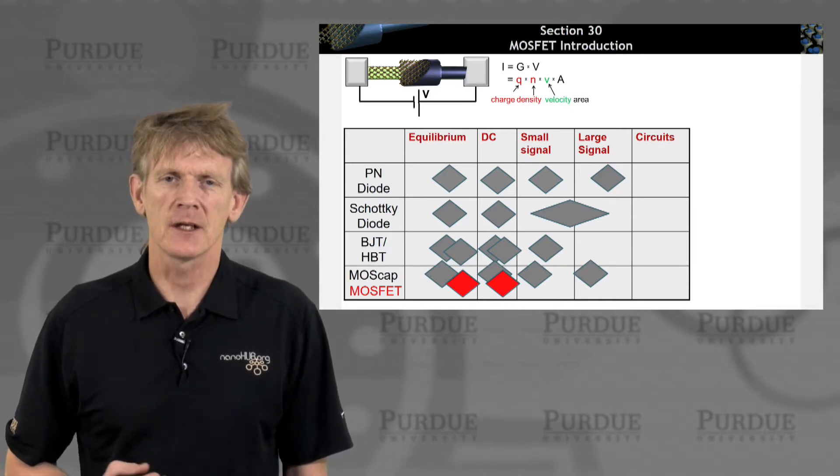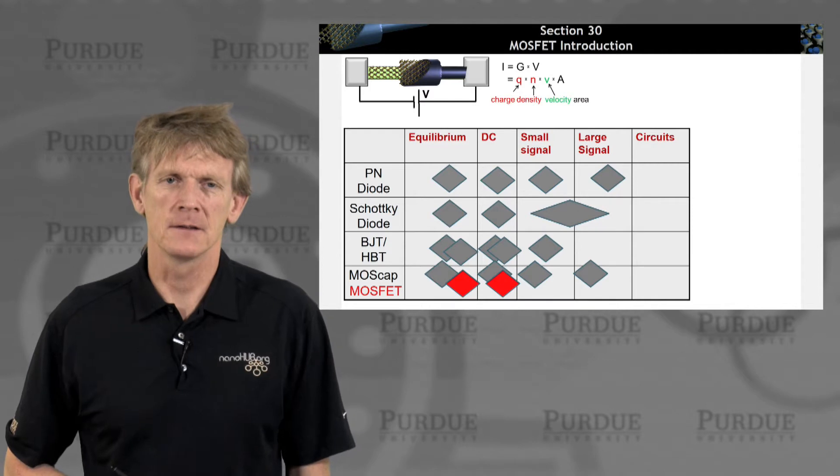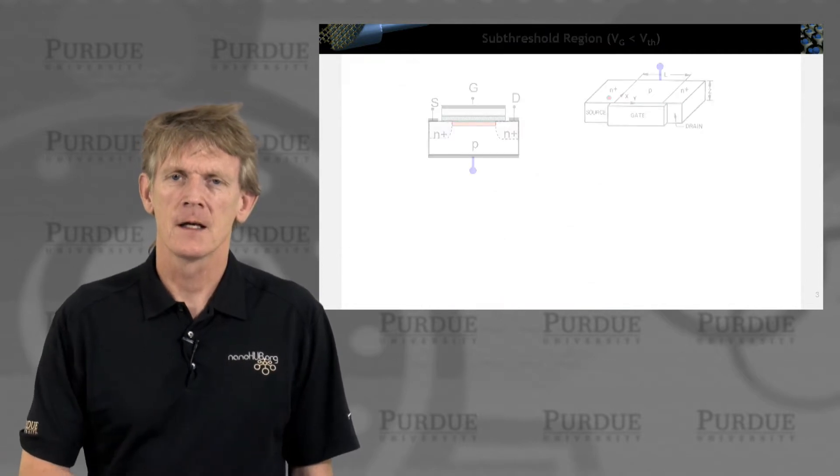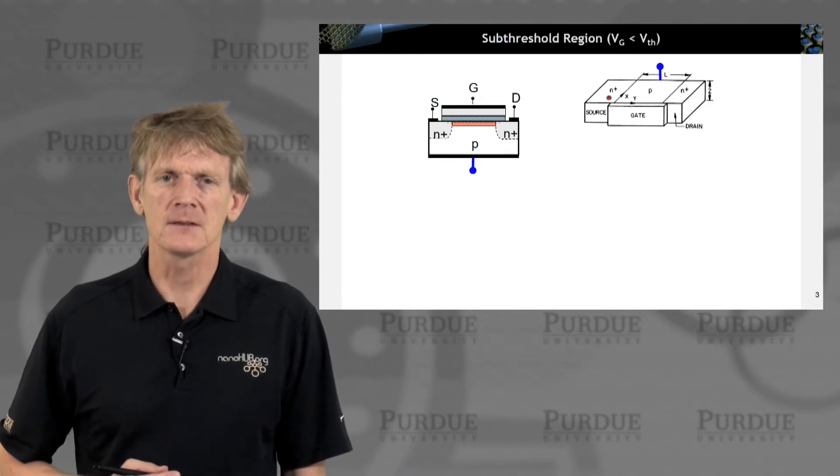We're touching the final device we want to touch in this course, and we'll talk about equilibrium conditions and DC bias conditions, and here we are. You've seen a sketch of this type of device,